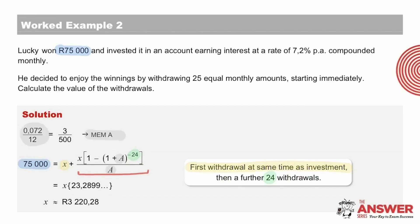Then to solve for x, we can take x out as a common factor and add 1 to this fraction, giving the number in the bracket. And finally, divide 75,000 by this number in the bracket and the answer for x, which is the value of each of Lucky's withdrawals, is 3,220 rand and 28 cents.